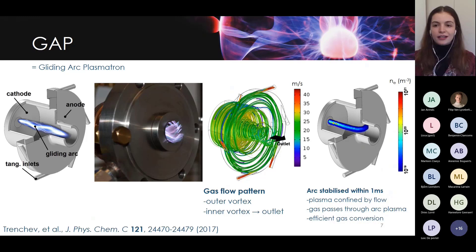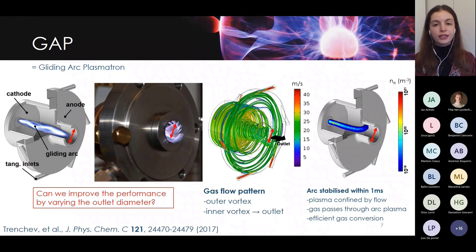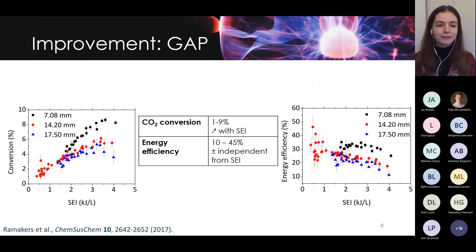Now, one thing we wanted to study in the past is can we improve the performance of this reactor if we vary the outlet diameter? The short answer is yes, we can. As you can see on the graph on the left there, I give the results of the CO2 conversion as a function of the specific energy input, which is a measure for the energy that is often used to compare different designs. And as you can see actually the smallest diameter, the seven millimeter, leads to a much higher conversion for the exact same energy input. So clearly these conditions are interesting.